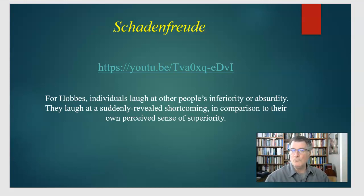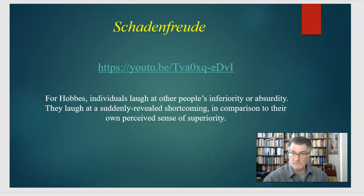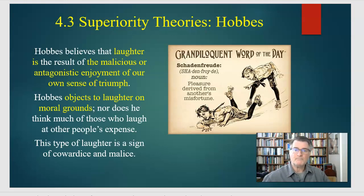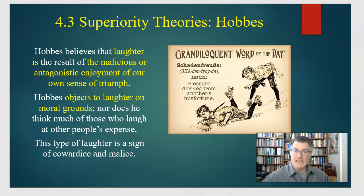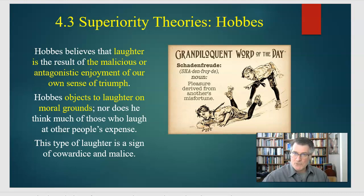Speaking of superiority, schadenfreude — pleasure derived from other people's misfortunes — is essentially what superiority theory is, as we've looked at in Plato, Descartes, and now Hobbes. This vocabulary should start to sound pretty familiar: laughter is a malicious or antagonistic enjoyment of our own sense of triumph over others, over their stupidity. I want to stress this — Plato, Descartes, Hobbes, and Bergson that we'll talk about shortly aren't in favor of this. This is not something they think is a good thing; they think it's a very inferior thing. It's us at our worst.